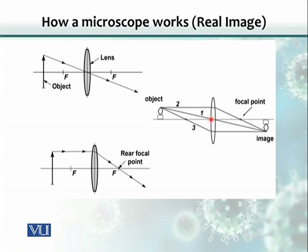Another ray that passes through the middle of the lens does not get bent — it remains straight. Where these two rays meet, the image is formed. Because it is formed by the converging of these rays, it is called a real image. It is upside down and much smaller.